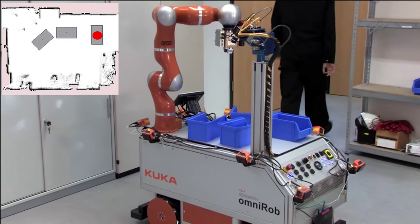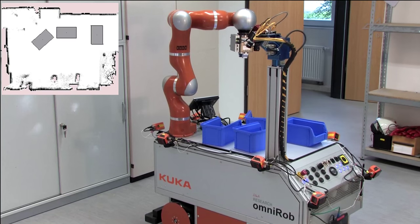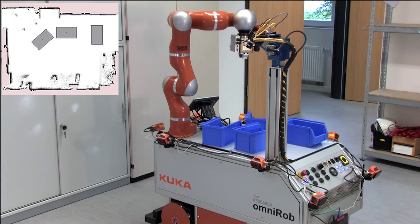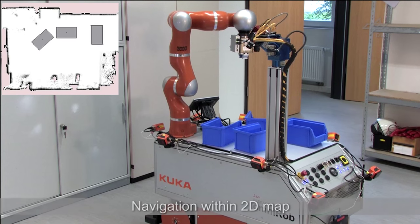After the worker places small load carriers on the robot, the platform autonomously navigates to the destination based on a previously recorded 2D map.